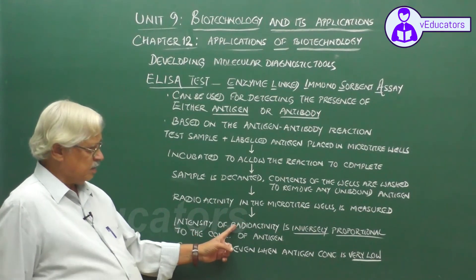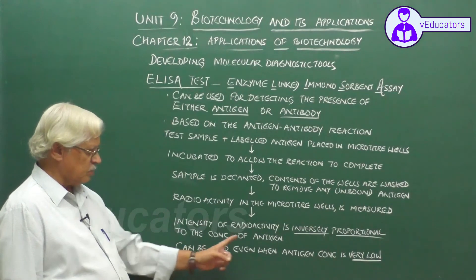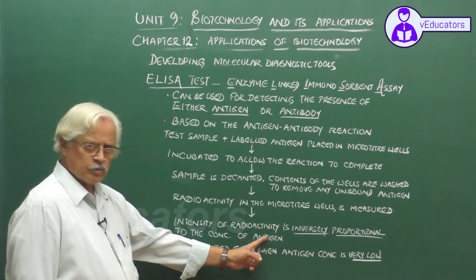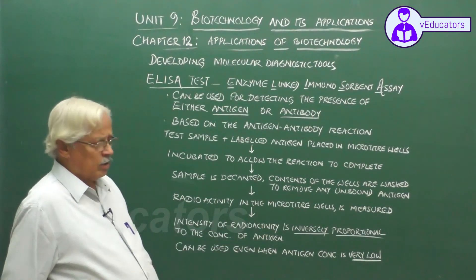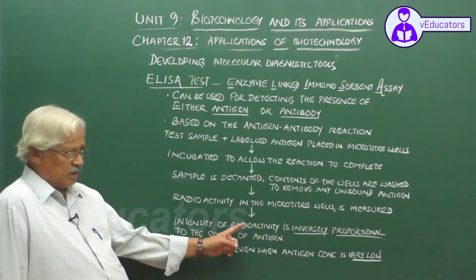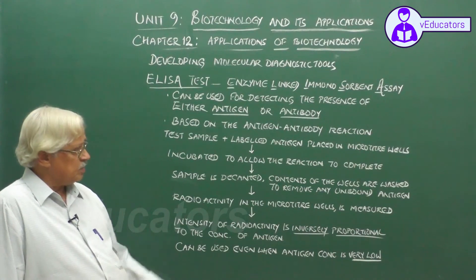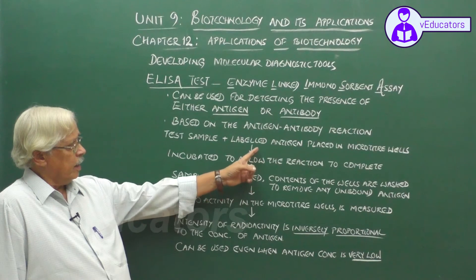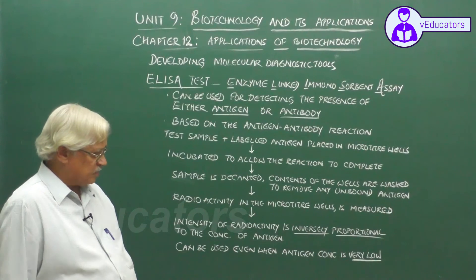The intensity of radioactivity is inversely proportional to the concentration of the antigen. So, more the radioactivity, less is the concentration of the antigen; less the radioactivity, more is the concentration of the antigen, because the labeled antigen would have involved itself in the reaction.